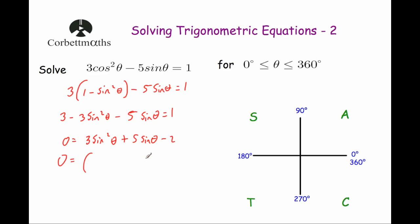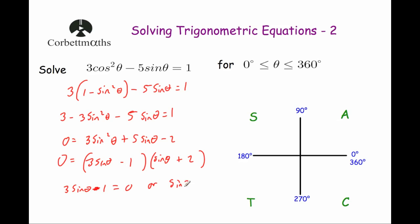Factorizing gives bracket 3 sine θ minus 1 bracket times bracket sine θ plus 2 bracket equals zero. This means either 3 sine θ minus 1 equals zero or sine θ equals negative 2. Since sine θ cannot equal negative 2 (it must be between minus 1 and 1), we discard that solution.